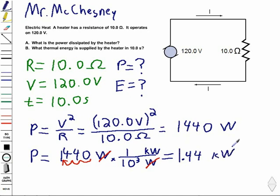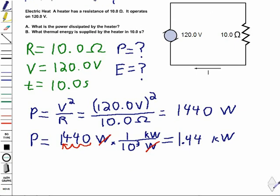And if I look at my problem, I had four significant figures in my first number, three in my second number, so when I'm done, I should have three significant figures. So my first answer, how much power do I have? 1.44 kilowatts.